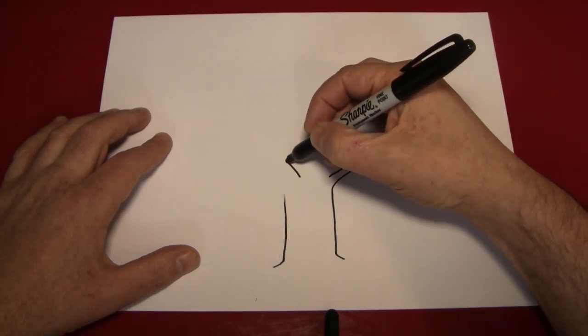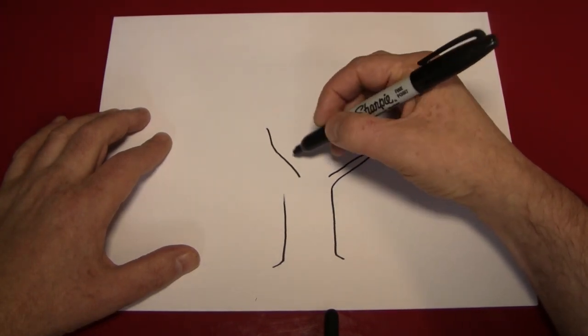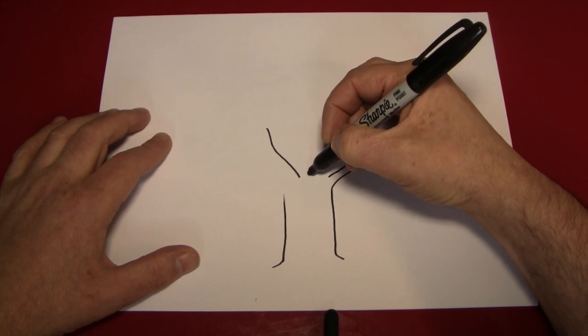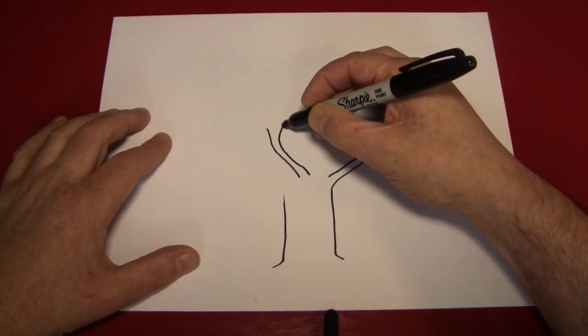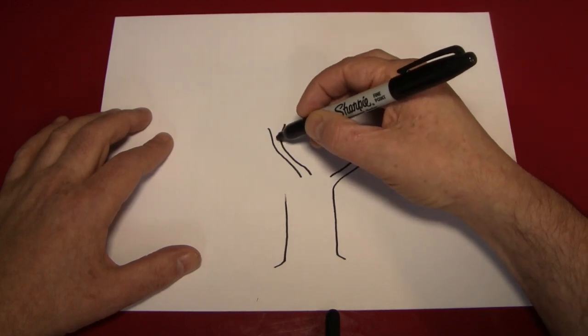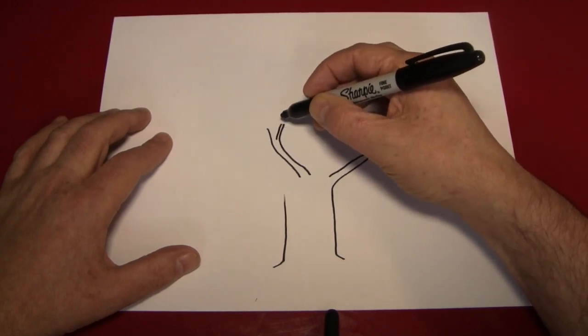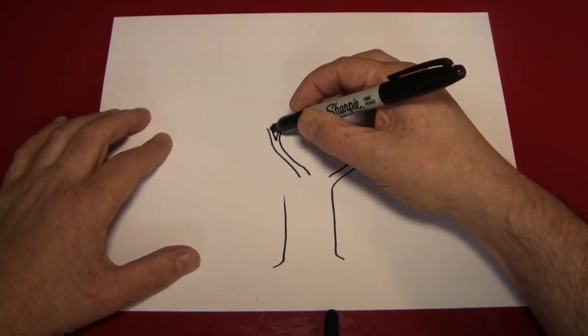A couple more. We'll put one right here. Like I said, you start with a thicker shape. You get a little bit narrower, and then they can just branch off like that.